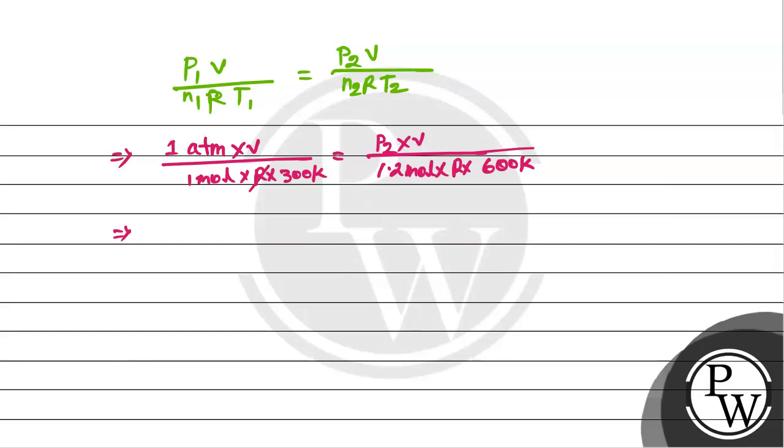Now R will cancel out, mole will cancel, Kelvin will cancel. It will be atm. So P2 will be 1.2 into 600 divided by 300 into 1 atm. So 300 will remain.